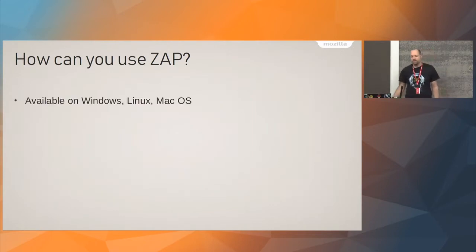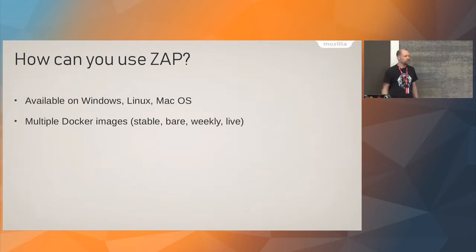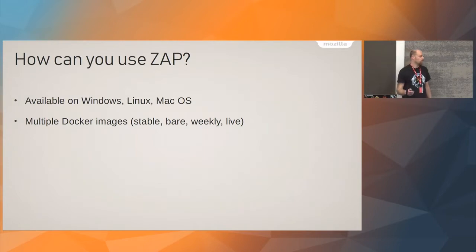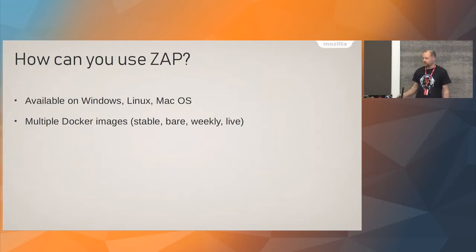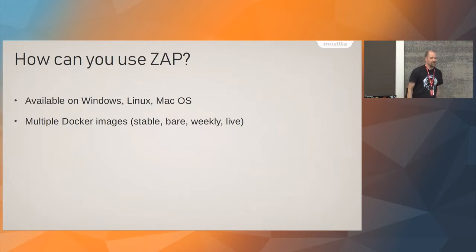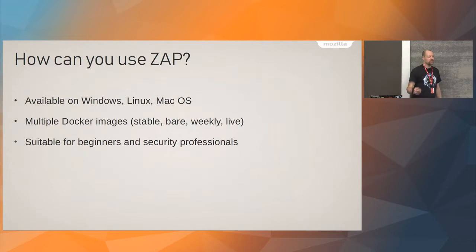So how can you use ZAP? It is a Java application, available on Windows, Linux, and macOS. We've got multiple Docker images. The stable is the same as the stable release, which we haven't updated for over a year now, and we should get the next version out soon. We have a weekly release — every Monday there's a new weekly ZAP release with a Docker image. We also have a live image. We've had people come onto our IRC channel on Mozilla, tell us about a problem, and in some cases we've fixed those and told them an hour later it's fixed — not for everything, but we can do it sometimes.